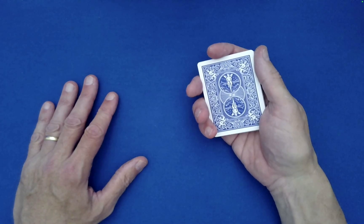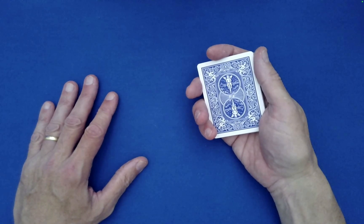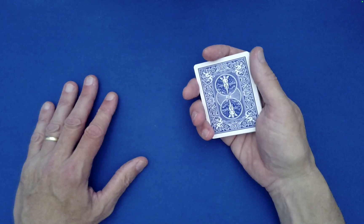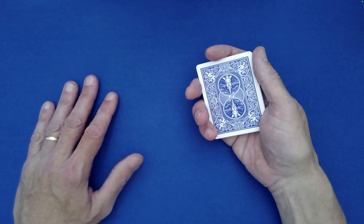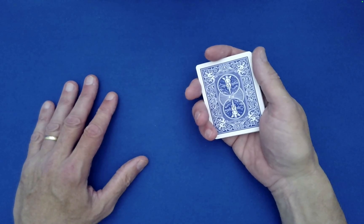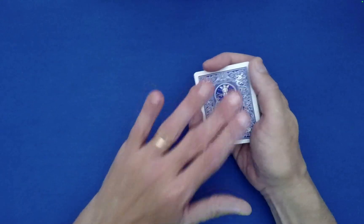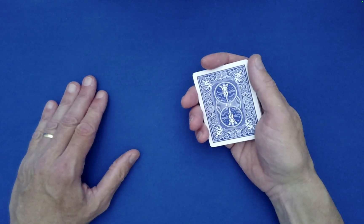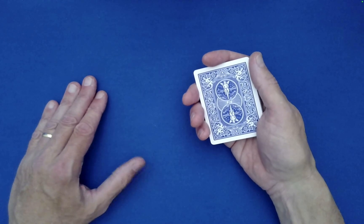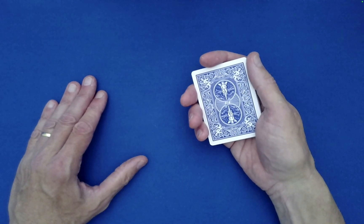Now essentially, well not essentially, what has happened is their noted card is back at the bottom. So if you want to skip the Klondike, the left right, and then the dealing out of their name, you can skip those three and then you're, so in some sense we're at the very beginning where they just noted their card.